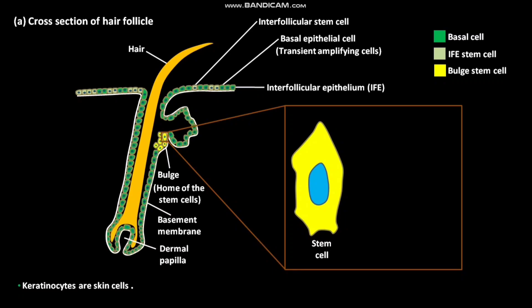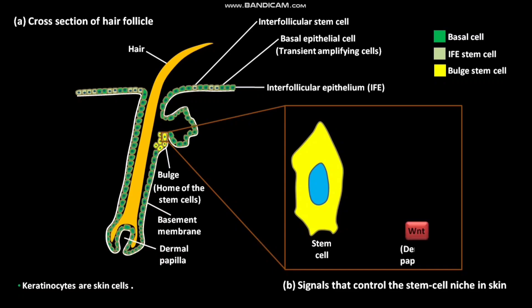We will discuss signals that control the stem cell niche in skin. A WNT signal present in the dermal papilla induces differentiation of the stem cell in the bulge. This stem cell then undergoes differentiation to form new hair cells.